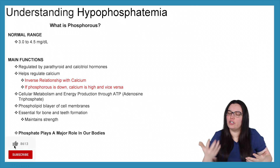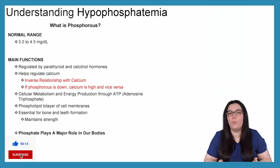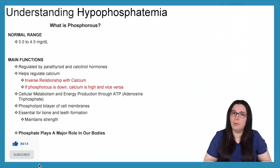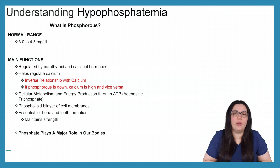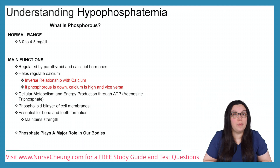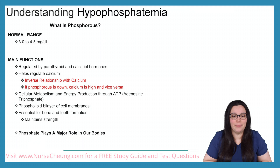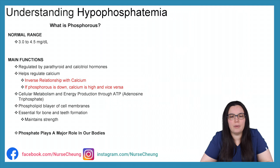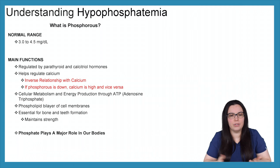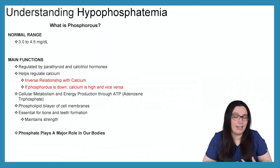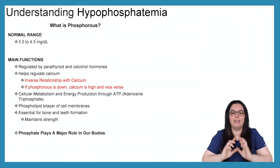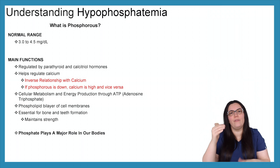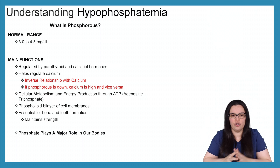In order to understand electrolyte imbalances, we really have to understand what the electrolyte is. What is phosphorus? A normal range for phosphorus is between 3 to 4.5 milligrams per deciliter. Some of the main functions of phosphorus: it's really regulated by the parathyroid and calcitriol hormones. It helps regulate calcium, so it has an inverse relationship with calcium. When phosphorus is down, calcium is going to go up, and vice versa.